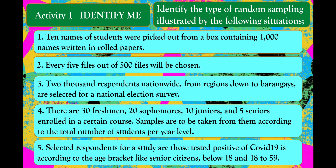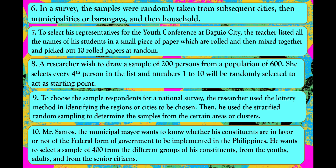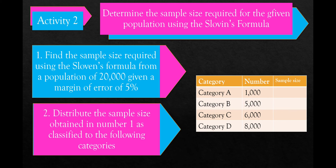For your activity, identify the types of random sampling illustrated by the following situations — items 1 to 5 and 6 to 10. Then for activity 2, determine the sample size required for the given population using Sloven's formula. First find the sample size, then distribute the sample size using the table on the right side.